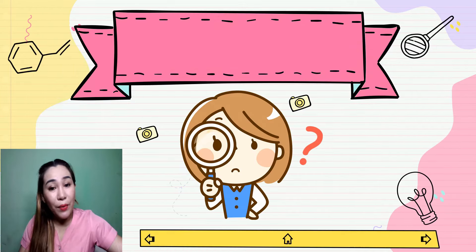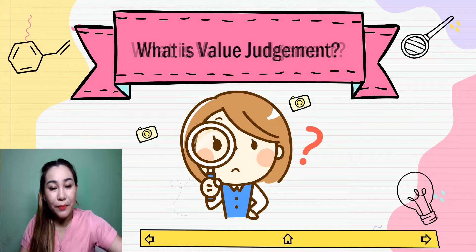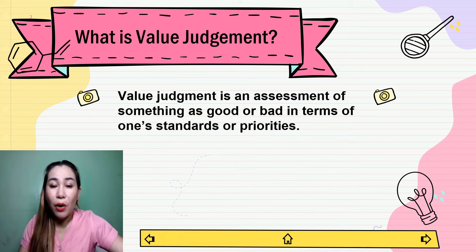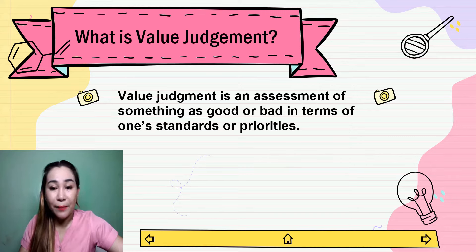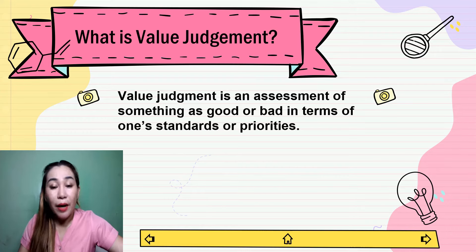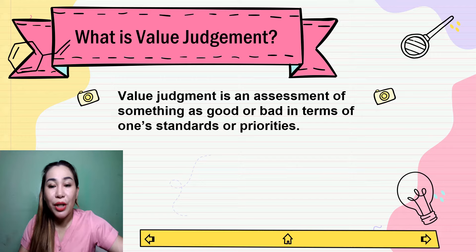Let's discuss now about value judgment. A value judgment is a judgment of the rightness or wrongness of something or someone, based on a comparison or other relativity. A value judgment can refer to a judgment based upon a set of values or on a particular value system. It can be used in a positive sense, signifying that a judgment must be made taking a value system into account. Most commonly, the term value judgment refers to an individual's opinion, which is formed to a degree by their belief system and the culture to which they belong.